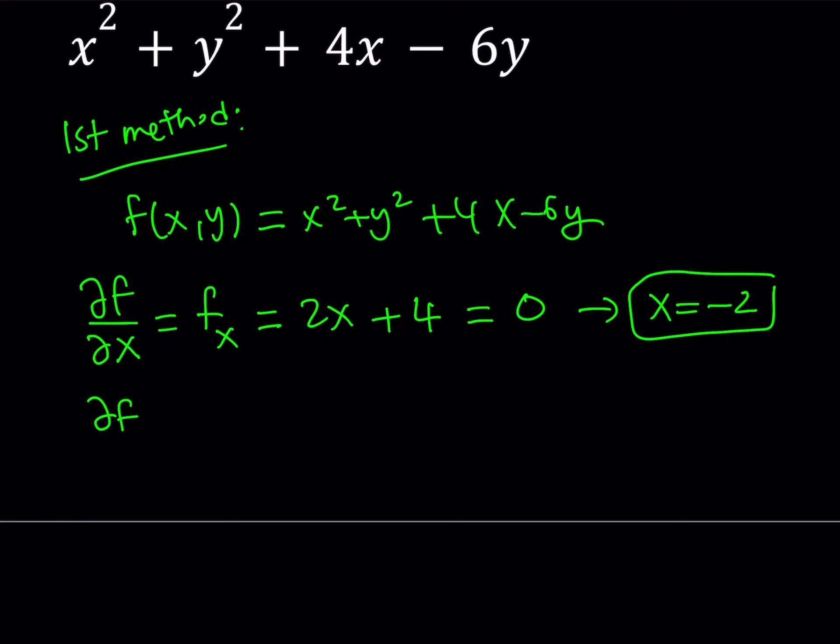I'll do the same thing for the y variable. The partial derivative of f with respect to y, which can be written as f sub y, is equal to: Now x is considered the constant. The derivative of y squared is 2y. And the derivative of 4x is 0 with respect to y, and then minus 6. And I'm going to set that equal to 0 as well. From here I'm getting y equals 3.